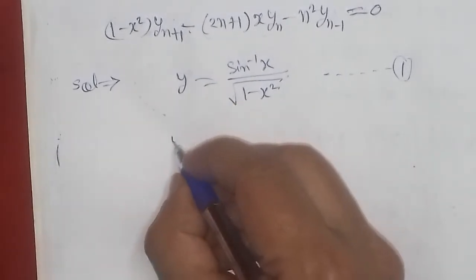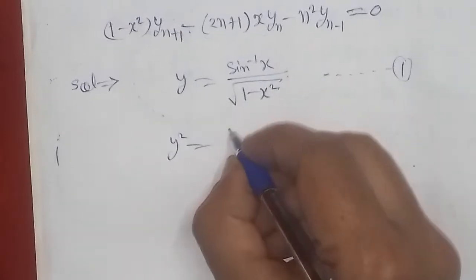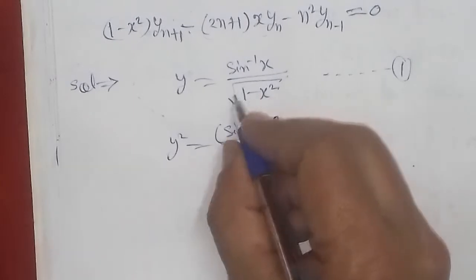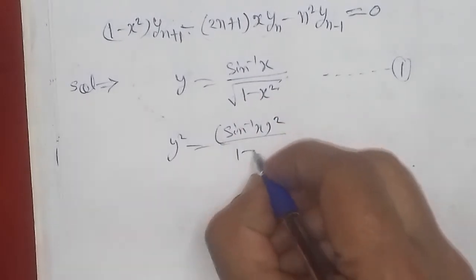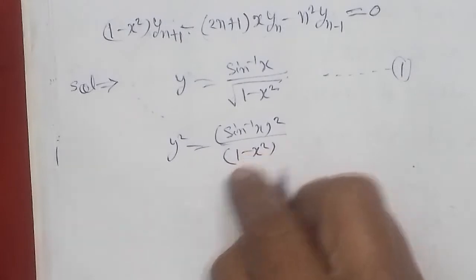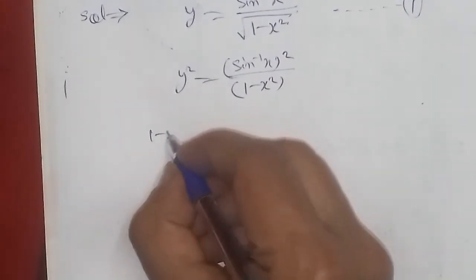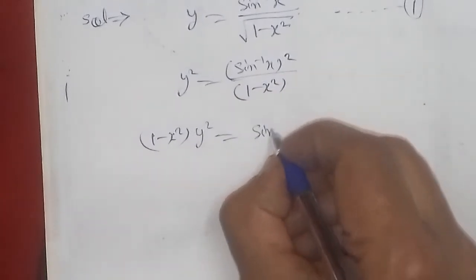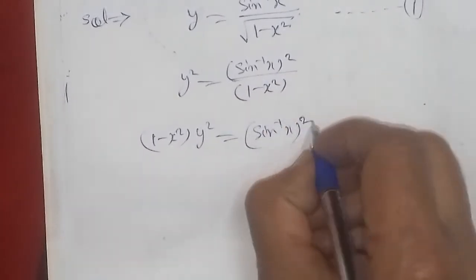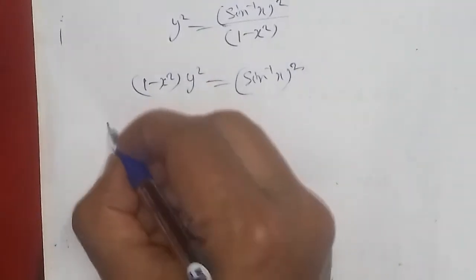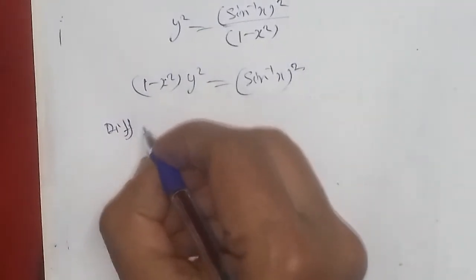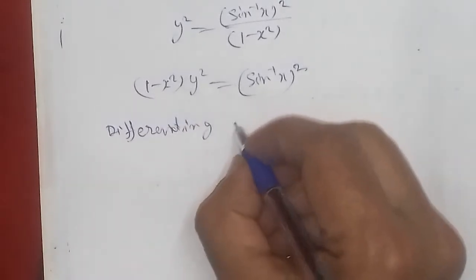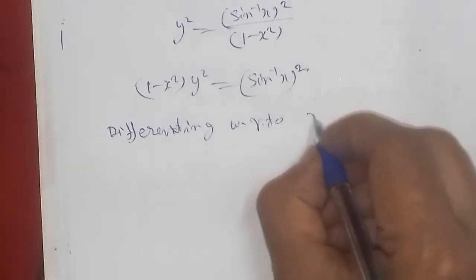So on the left hand side we have y squared, and on the right hand side we have (sin inverse x) squared. Squaring removes the square root, leaving 1 minus x square in the denominator. Now we differentiate both sides once with respect to x.